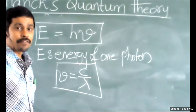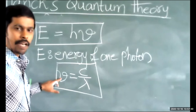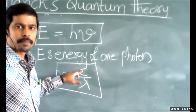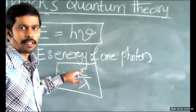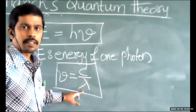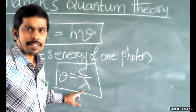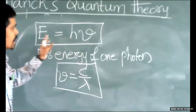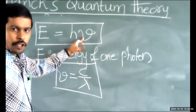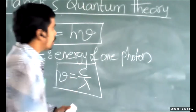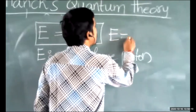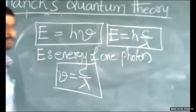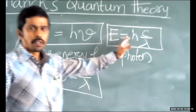The frequency of emitted radiation ν equals c divided by λ, where c stands for velocity of light and λ means wavelength of emitted or absorbed radiations. So ν = c/λ. In the formula E = hν, replacing ν with c/λ, we get E = hc/λ.